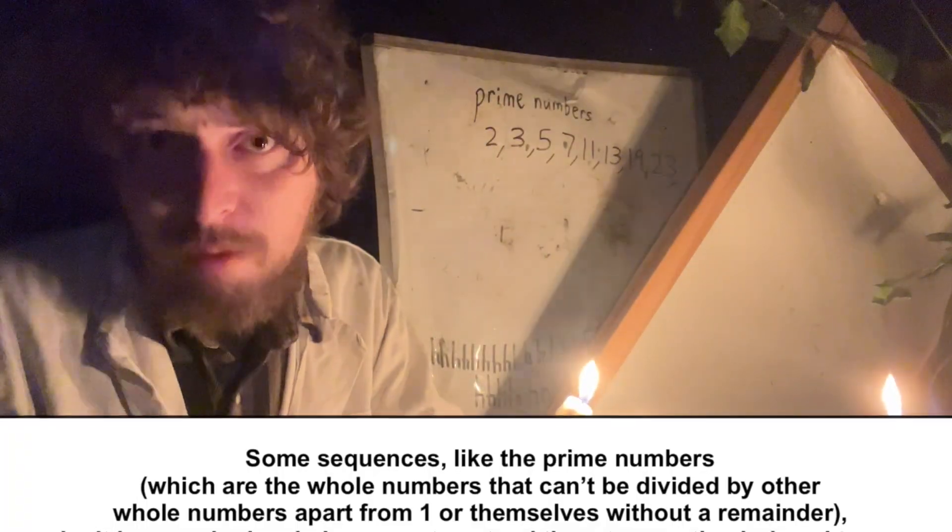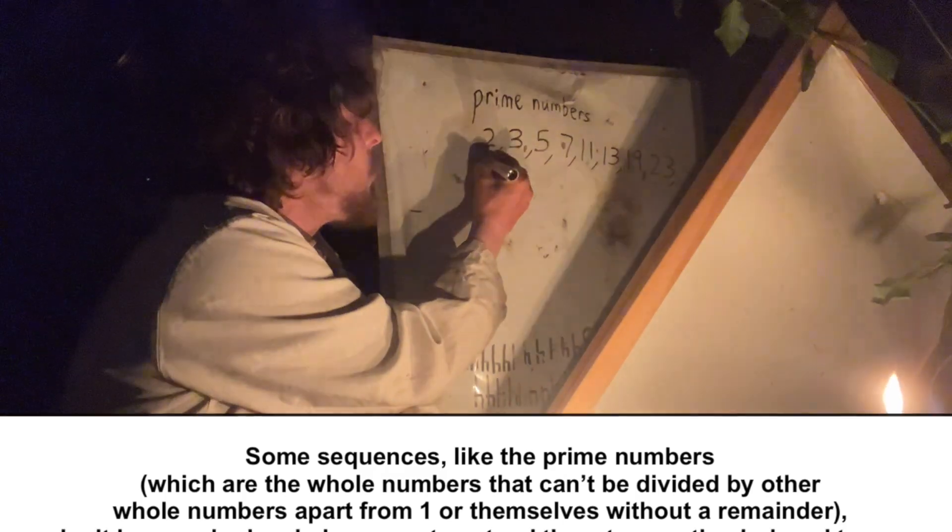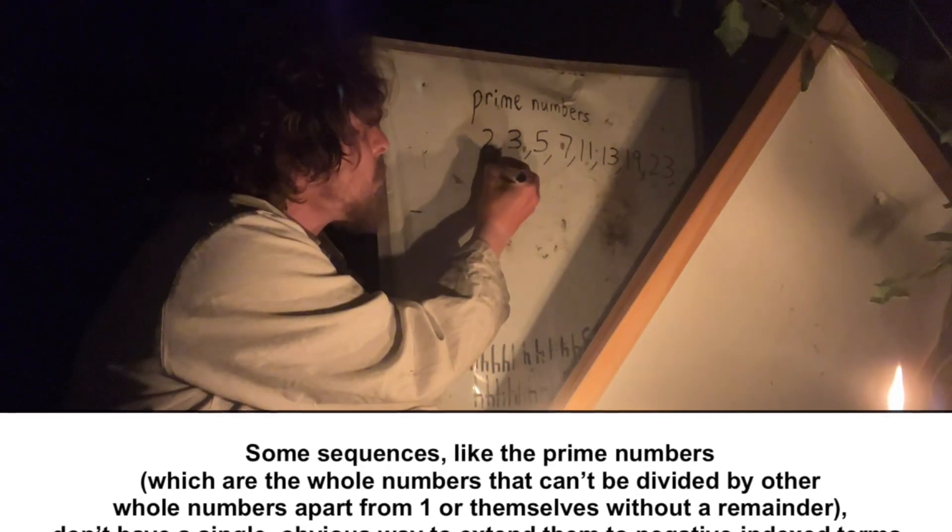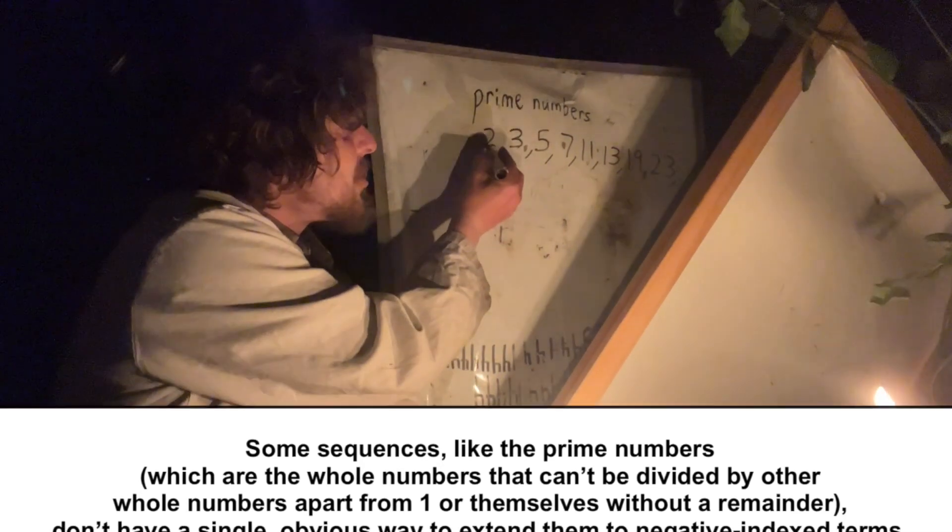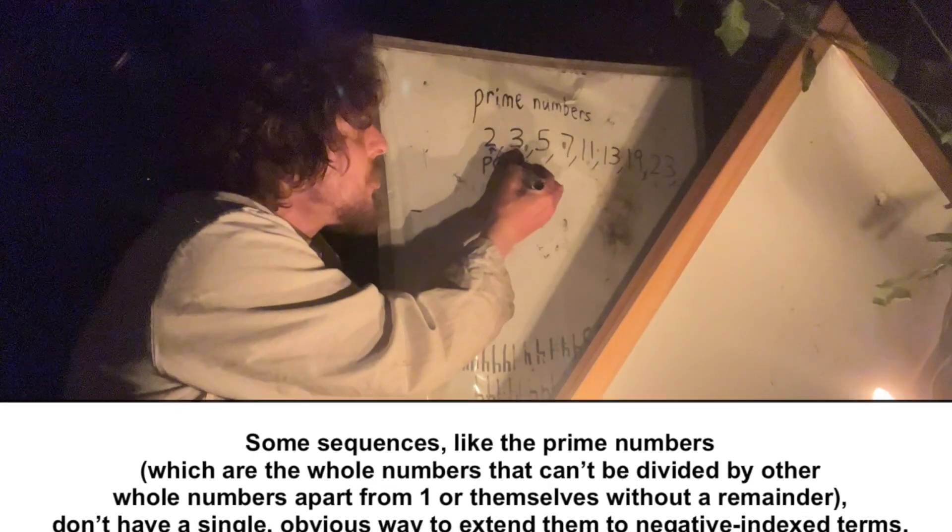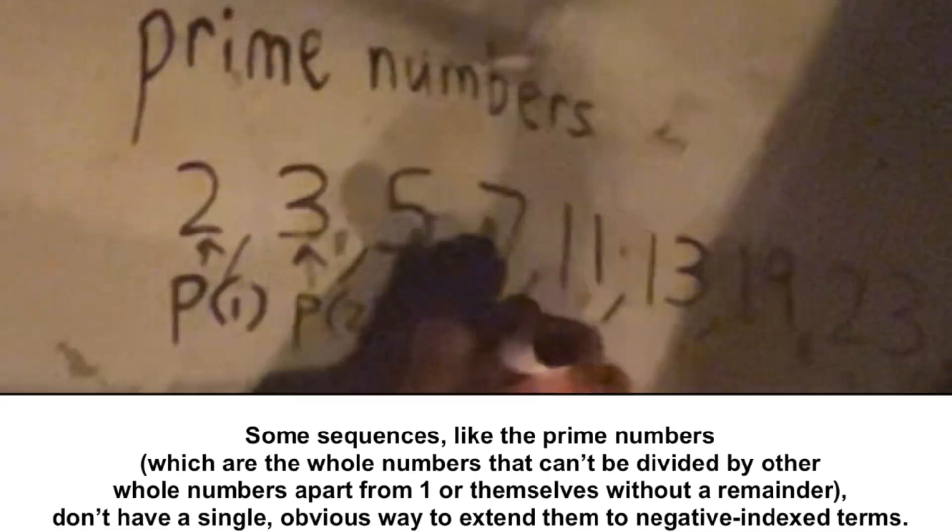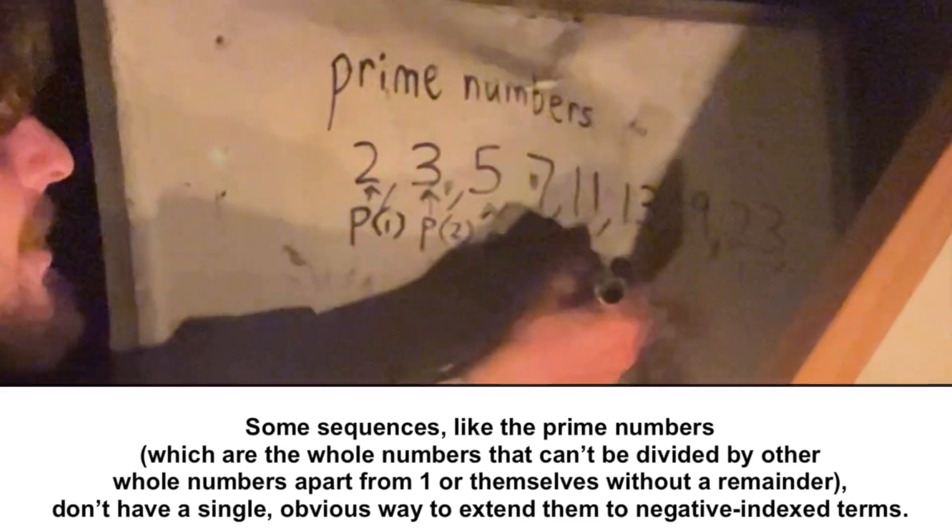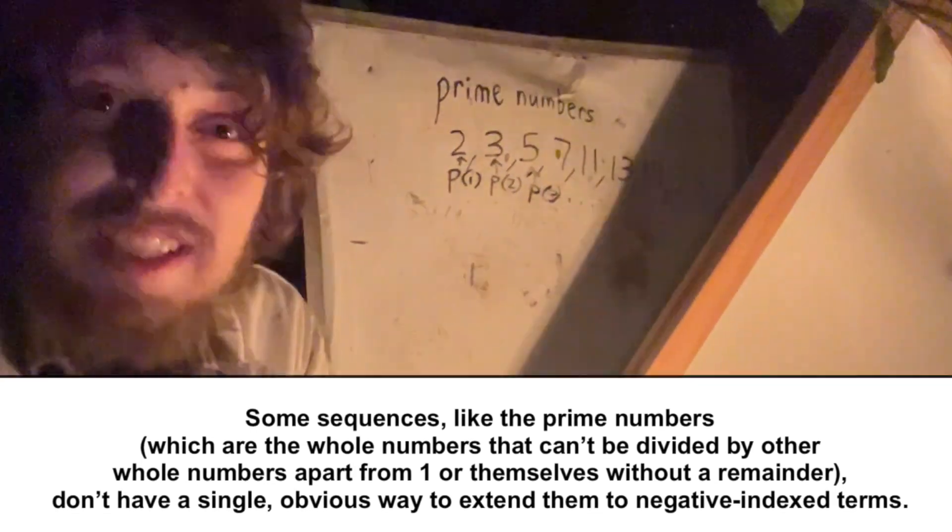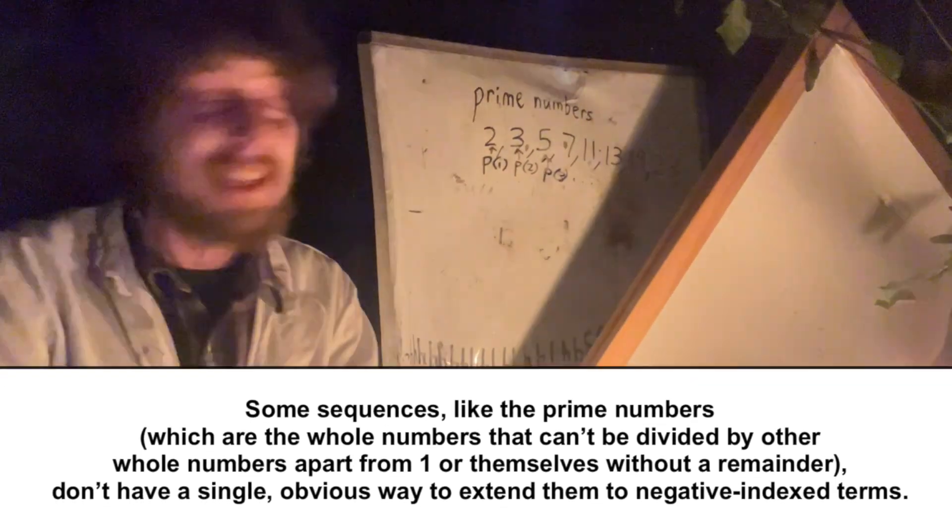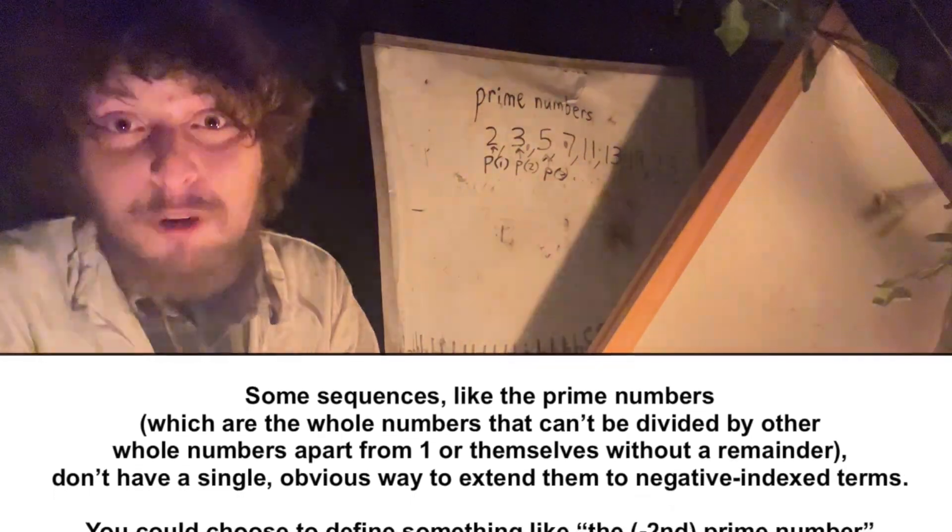If we were to index those, we could say that P1, meaning the first prime, is two, and then P2 is three. That's how we would typically index it, and there's not really, in most cases, a reason to do anything different.